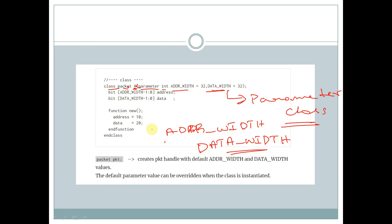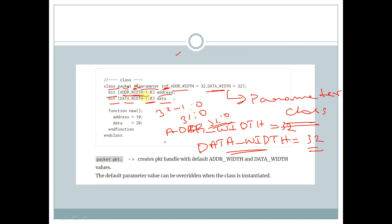These two are parameters of int data type. We are assigning the value of ADDR_width equal to 32. We are declaring two properties called address and data of bit data type, with size ADDR_width minus 1 down to 0 and data_width minus 1 down to 0. So address is 32 bits wide and data is 31 down to 0. Within the function new, we are assigning address equal to 10 and data equal to 20.